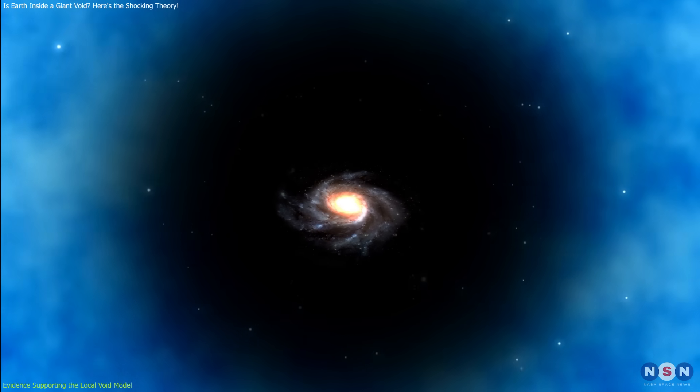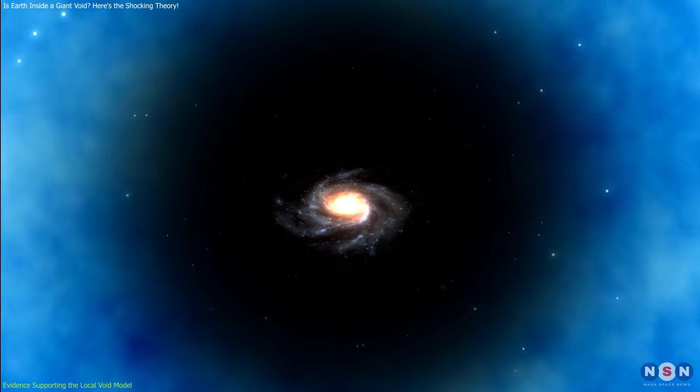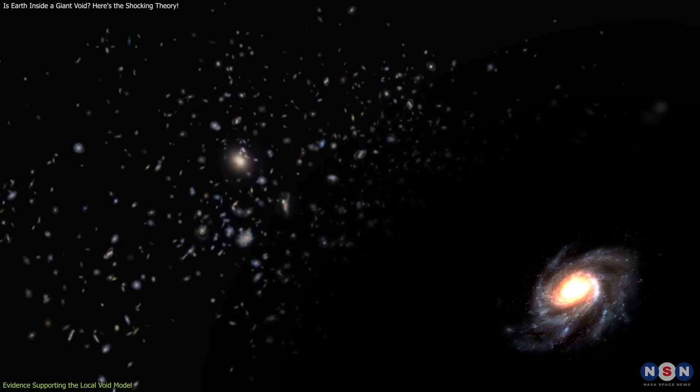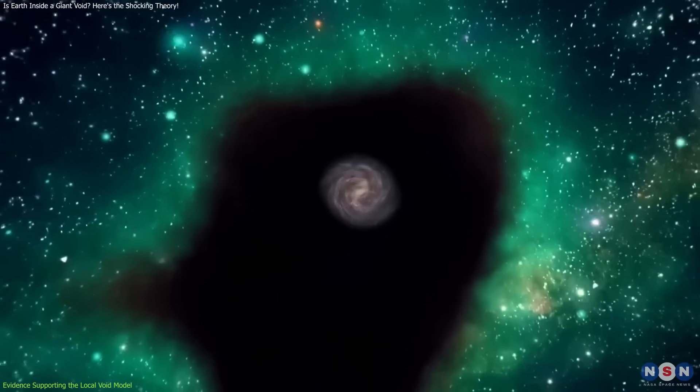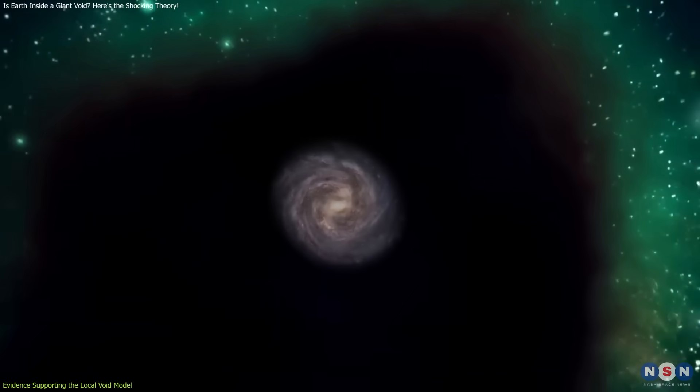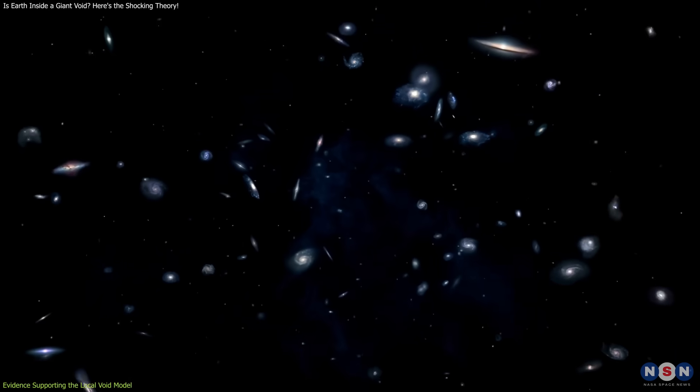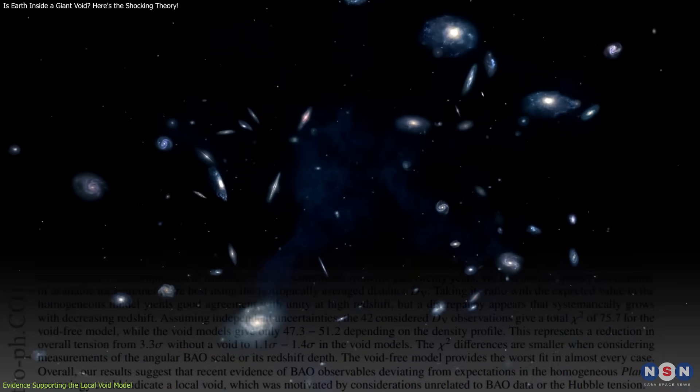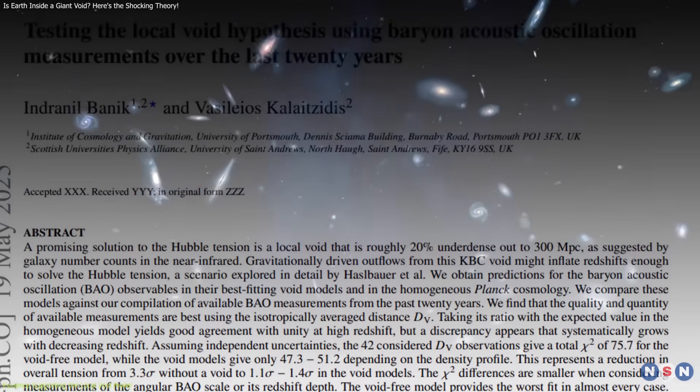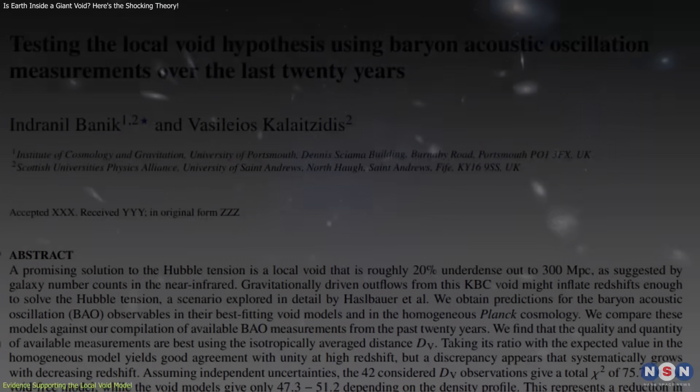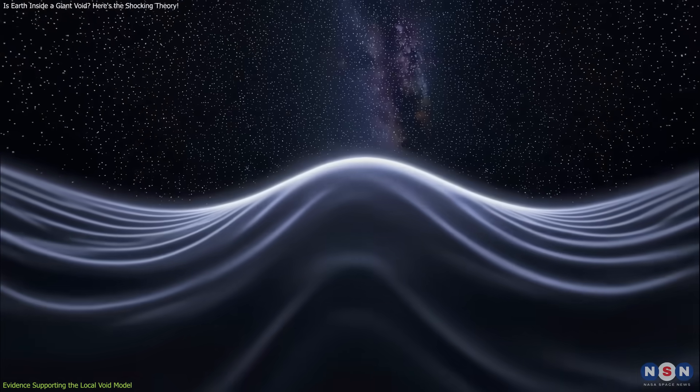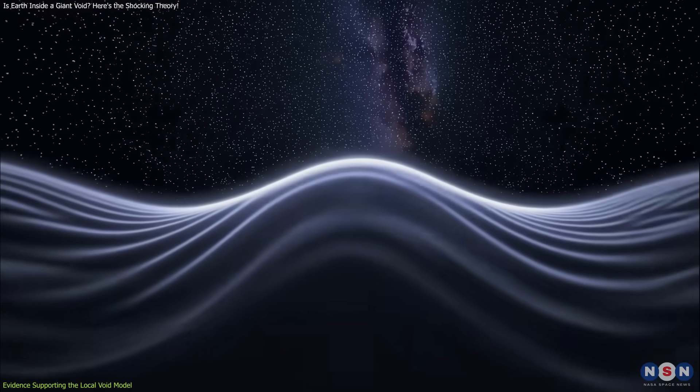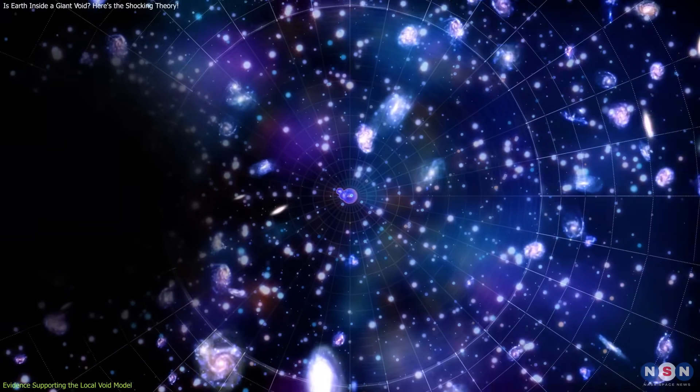Evidence for the local void theory comes from observations showing fewer galaxies in our region compared to surrounding areas, supporting the idea that we're inside a vast cosmic void. While still under investigation, this theory offers a strong explanation for the Hubble tension. Future tests will focus on refining BAO measurements and studying how voids affect gravitational waves and galaxy distributions.